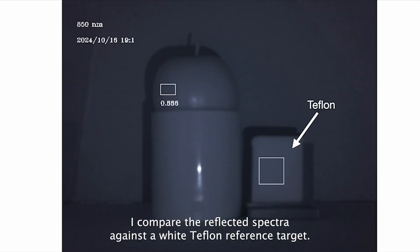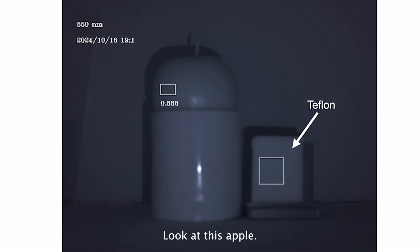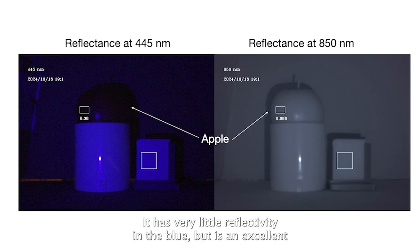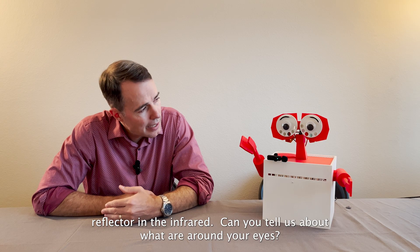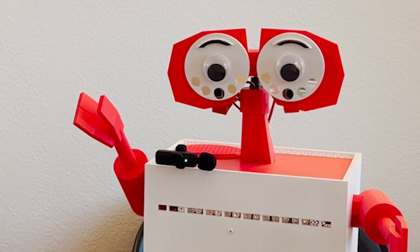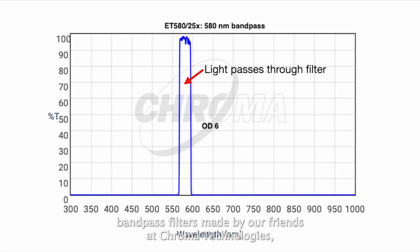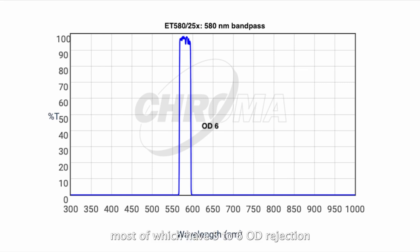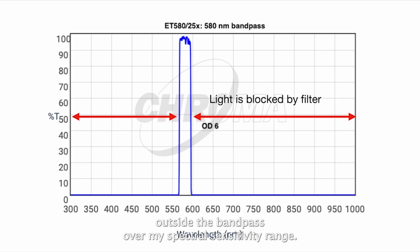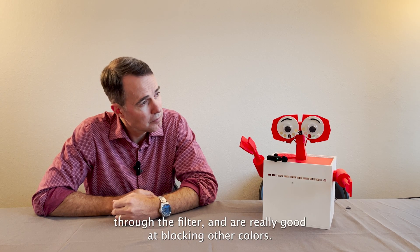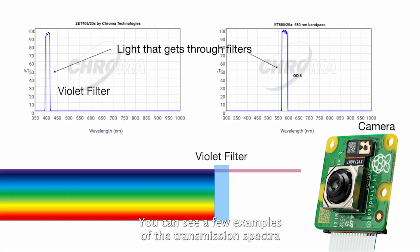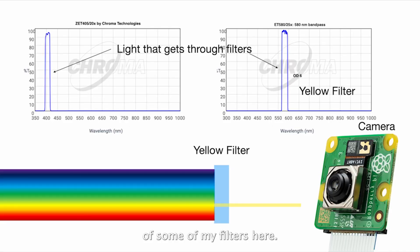I compare the reflectance spectra against a white Teflon reference target. Look at this apple. It has very little reflectivity in the blue, but is an excellent reflector in the red. They are narrow bandpass filters made by our friends at Chromatechnologies, most of which have 5 to 6 OD rejection outside the bandpass window over my spectral sensitivity range. That's a fancy way of saying they are really good at letting certain colors through the filter and are really good at blocking other colors.